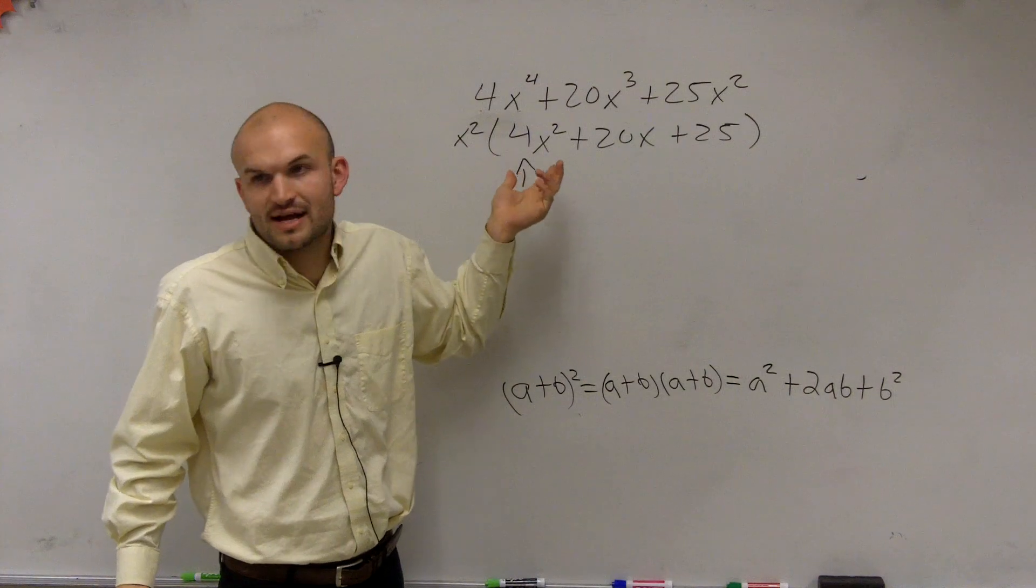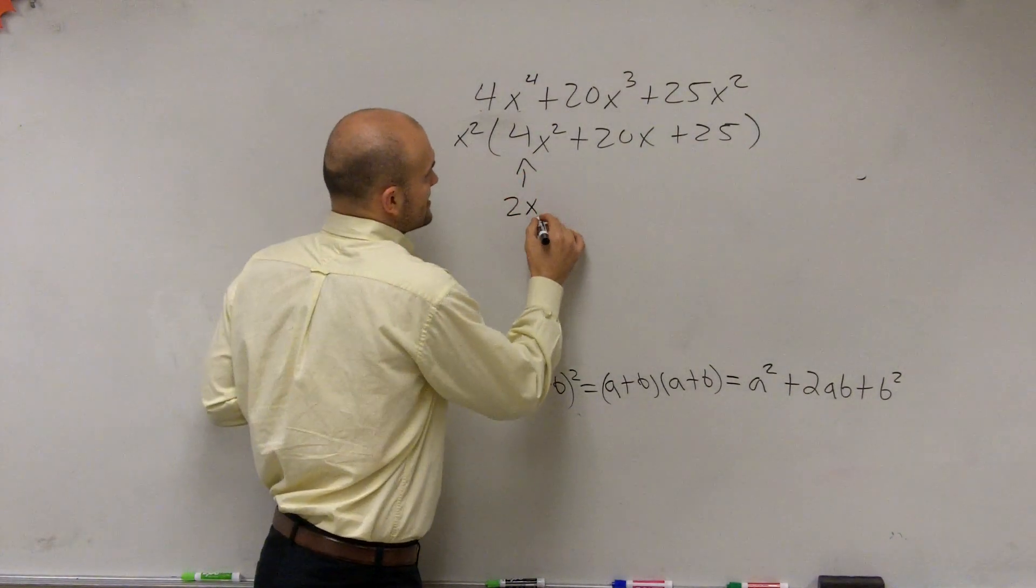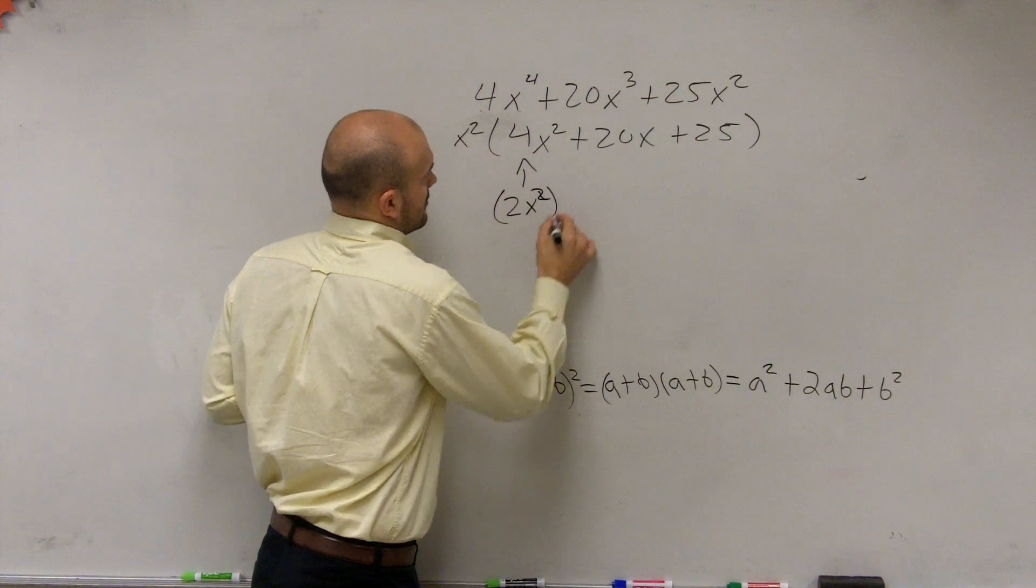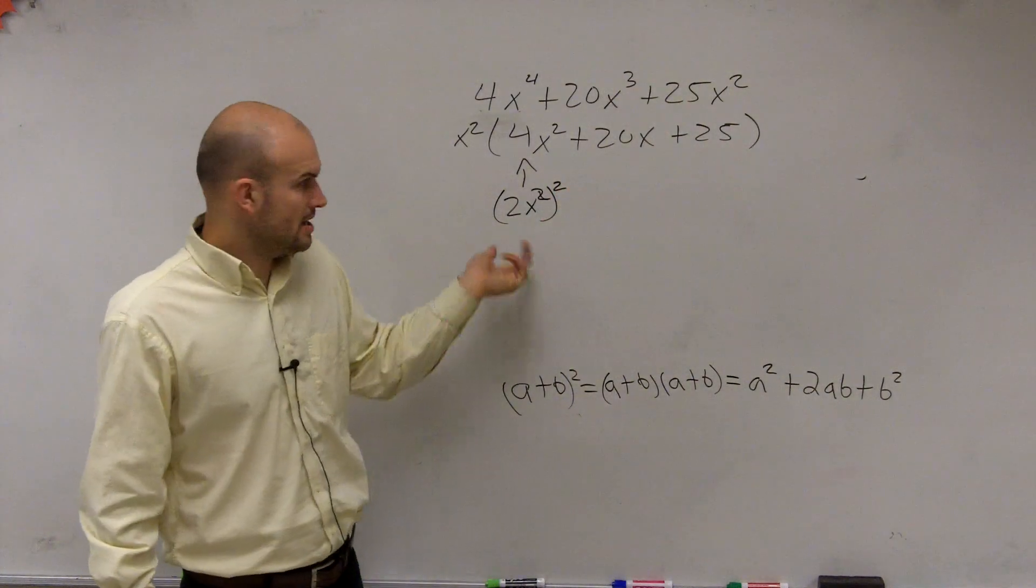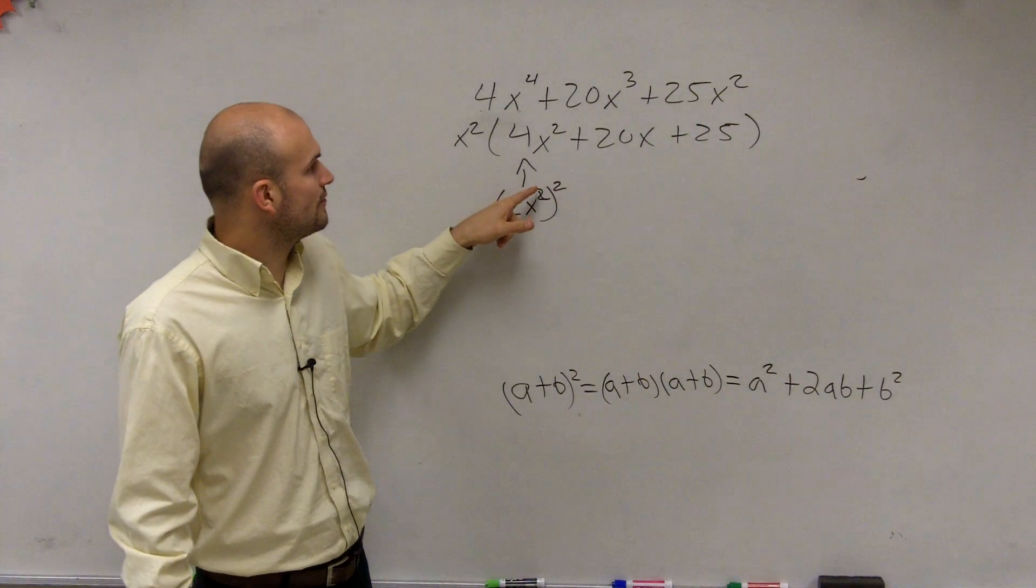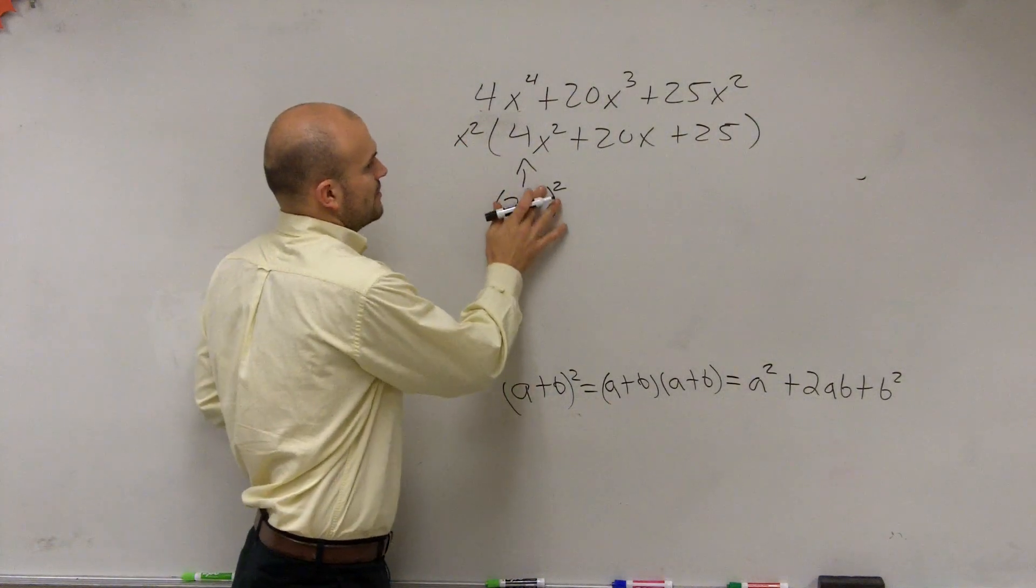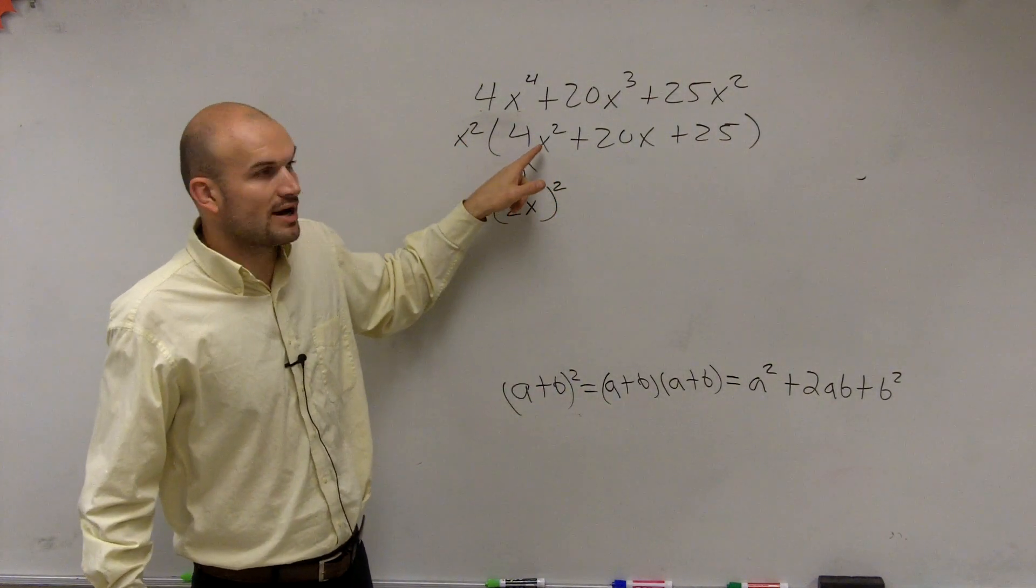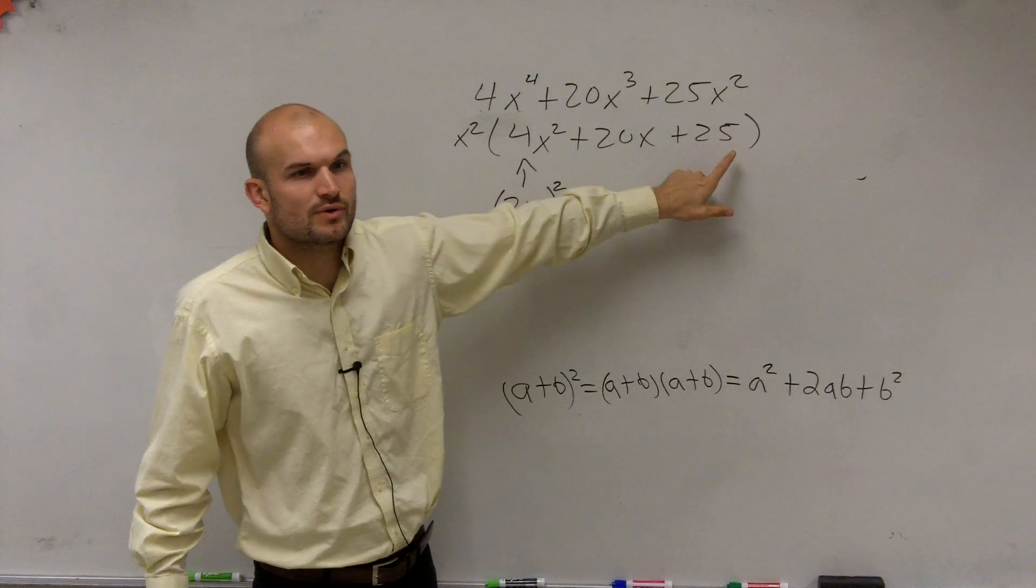Can we write this as a number squared? Yeah, we can rewrite this as 2x squared squared. Because 2x squared squared is going to be 4x to the 4, or 4x, 2x. 2x squared is going to be rewritten as 4x squared. And then can we write this as a squared number?